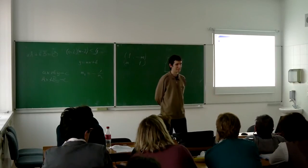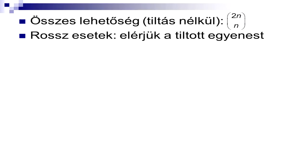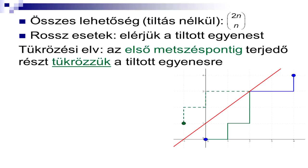Akkor az adódik, hogyha nem lenne ez a tiltott egyenes, akkor 2N alatt az N lehetőség lenne, hiszen N darab jobbra és N darab felfele lépést kell sorba rakni, akár ismétléses permutációval is megadhatnánk, illetve kombinációval. Egy szokásos trükk, hogy az összes esetből vonjuk ki a rossz eseteket, tehát számoljuk meg, hogy hány olyan eset van, amikor elérem ezt a tiltott egyenest.